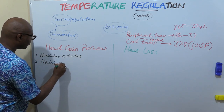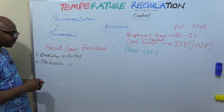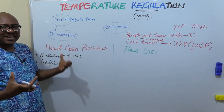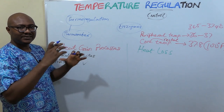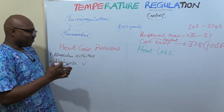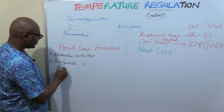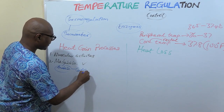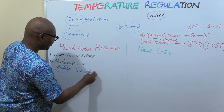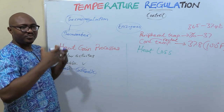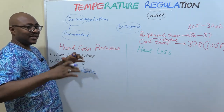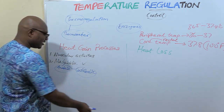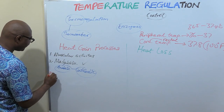Number two is metabolic activity, which is just another word for the different chemical processes that go on in the body. Metabolic activity can be divided into anabolic — which is build-up — and catabolic — which is breakdown — to synthesize and manufacture things. The liver is the chief metabolic organ. So metabolic activities also lead to heat gain.